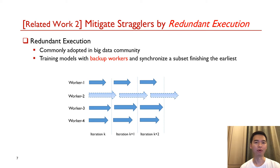In data analytic frameworks like Spark, a typical strategy to tackle stragglers is redundant execution. Its key idea is to launch multiple copies of the straggling task. For distributed model training, redundant execution means launching a few backup workers. In this figure, there is one backup worker. In each iteration, the gradients of the three workers finishing earliest are collected. Nonetheless, redundant execution can only eliminate the worst-case stragglers — among the three faster workers, worker three still lags behind others. Meanwhile, it is also a resource wastage to maintain the backup workers themselves.